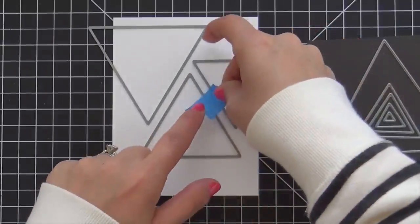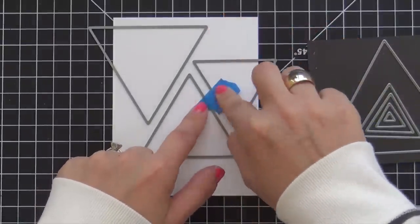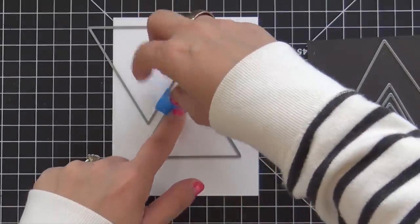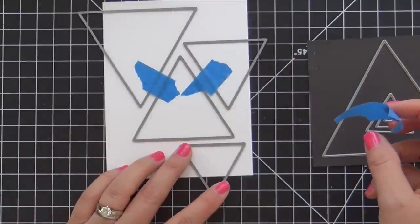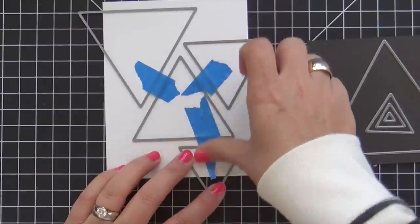They come pre-cut on a sheet, like a magnetic sheet, and I can't even tell you how much I love that they come pre-cut on a magnetic sheet. It's the little things I'm telling you.